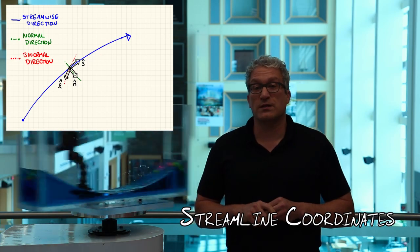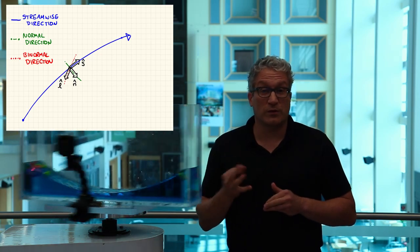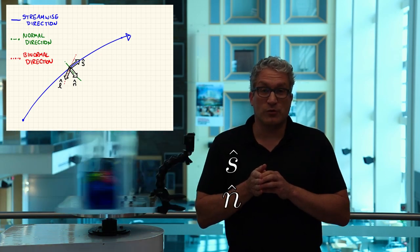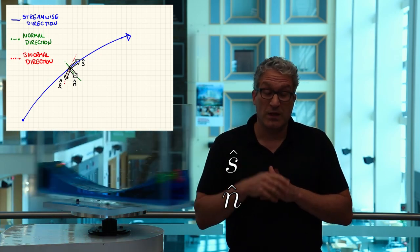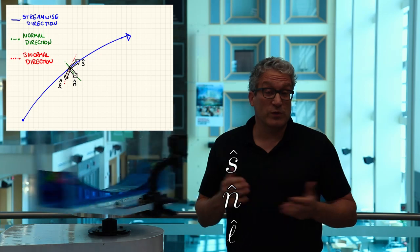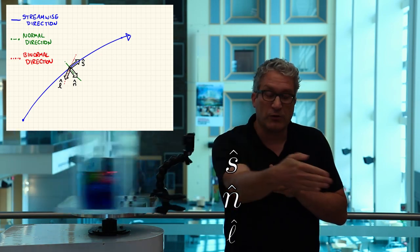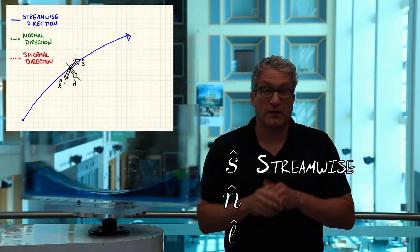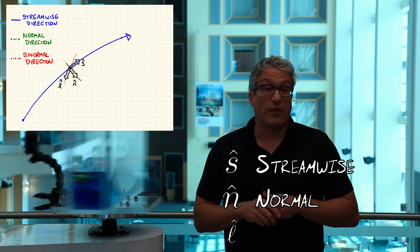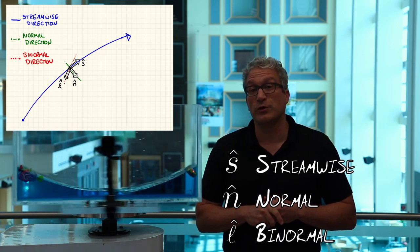Streamline coordinate systems are cylindrical coordinates that, rather than being fixed in space, are tied to the fluid as it moves through space. We have three coordinate directions: one in the direction the fluid is moving, one toward which the fluid's velocity is rotating, and a third pointing where the fluid is neither moving nor accelerating. For a fluid on a curving streamline, we define the streamwise coordinate along the streamline, the normal coordinate in the direction the streamline is curving, and the binormal coordinate normal to both.